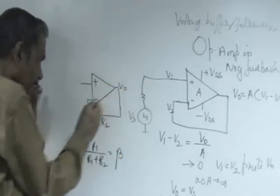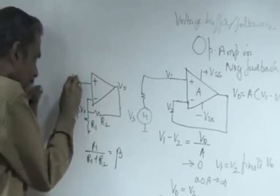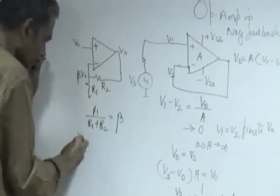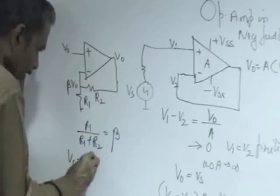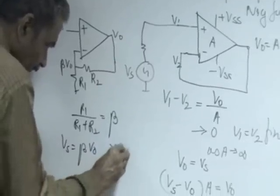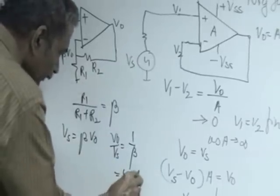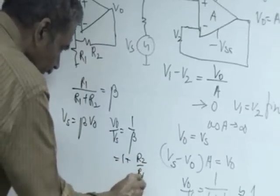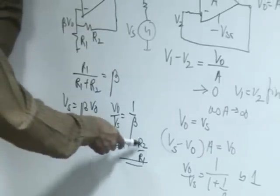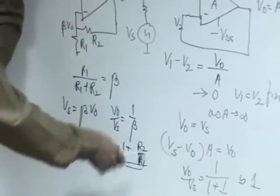If V naught is the output voltage, beta V naught is feedback and this is again the same as Vs. Therefore, Vs becomes equal to beta V naught or V naught over Vs is 1 over beta ideally. Therefore, it becomes 1 plus R2 over R1 which is going to give you any gain you want. Suppose you want to design a gain of 2, R2 is made equal to R1. If you want to design a gain of 10, R2 by R1 is made 9.